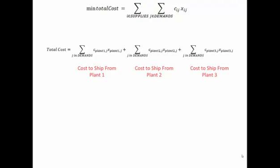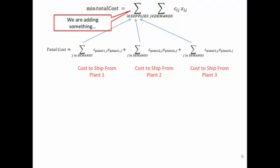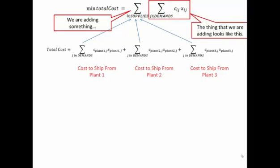We can see that we have a sum of sums. If we were to write this more succinctly, each of these sums looks very similar with the exception that we're switching the plants. So we can condense these down into a single summation where we're summing over each one of our supplies, and what we're summing over is another sum. The outer part says we're adding something for each of our supplies, and the inner summation defines the thing that we are adding together.